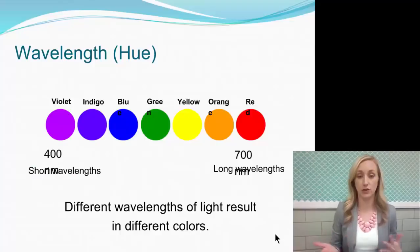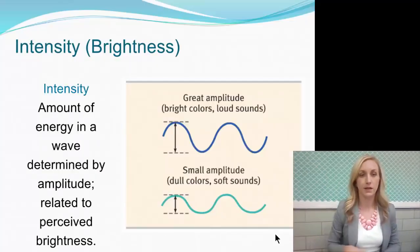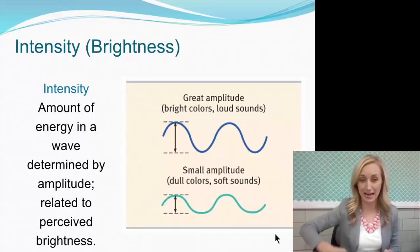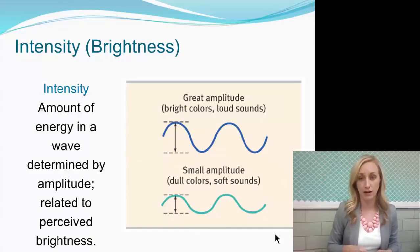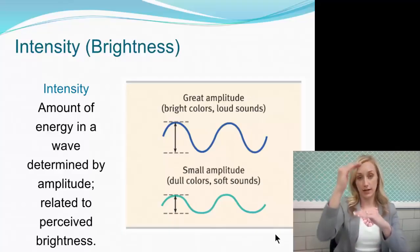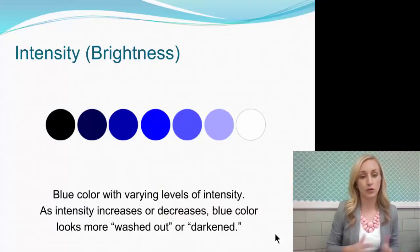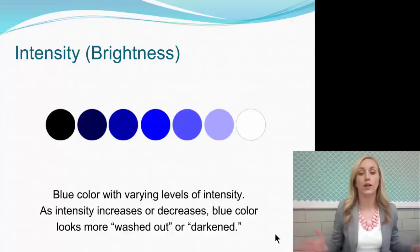Different wavelengths of light result in different colors, all the way from bluish-purple to the more intense reds. Brightness is intensity — the amount of energy in a wave determined by the amplitude, which is how high the waves are, and is related to perceived brightness. Greater amplitude means a more intense, brighter color, and also a louder sound — not the pitch, but the volume. Smaller amplitude produces more dull colors and softer sounds. A blue color with varying intensity will look more washed out or darkened.